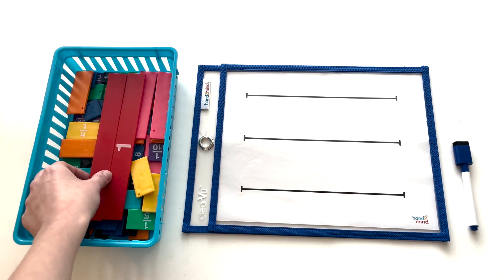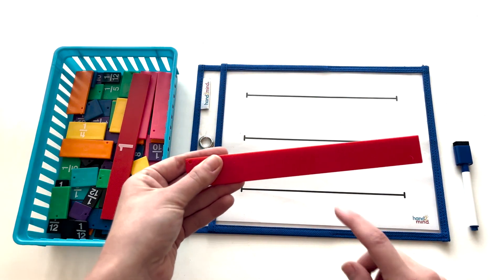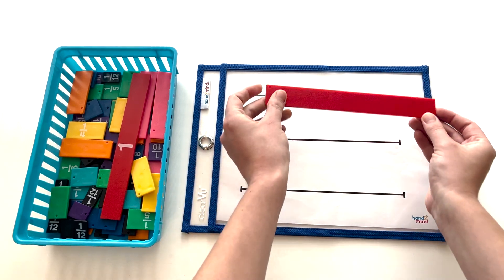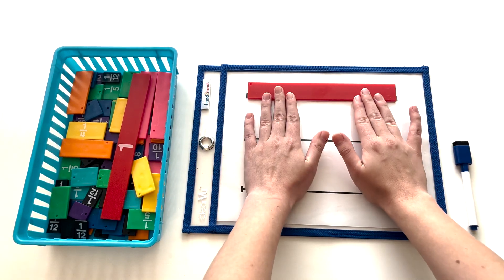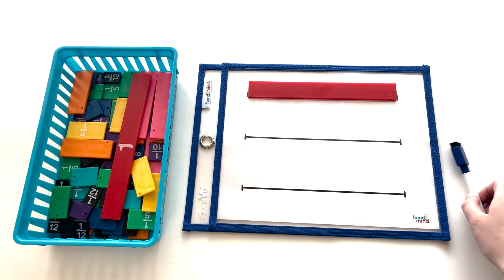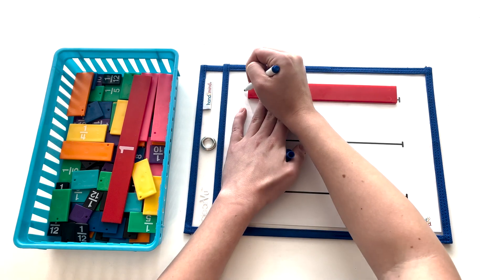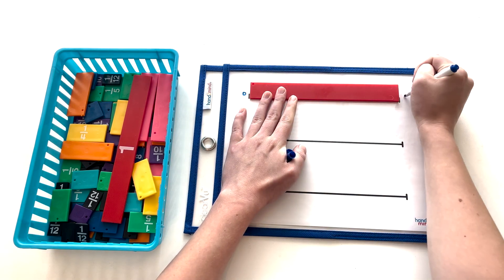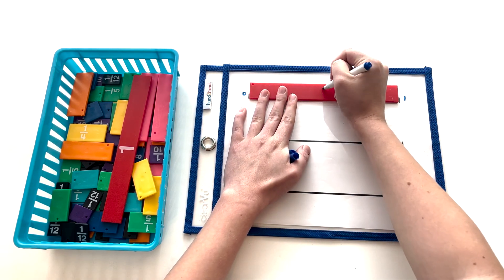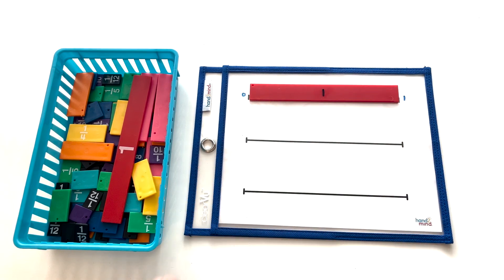First thing we're going to do is take out our one whole piece. We're going to place it with the blank side facing up. We're going to label our number fraction line with a zero on the left hand side and a one on the right hand side. This tells us that this rainbow fraction tile is representing one whole.